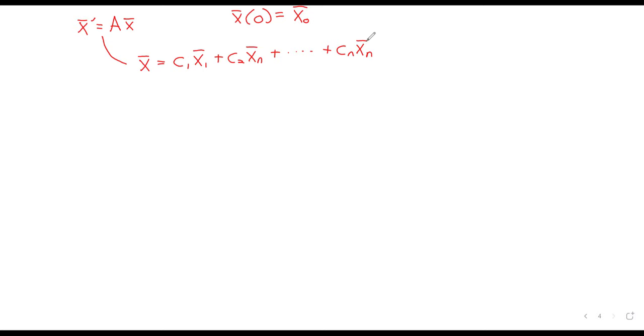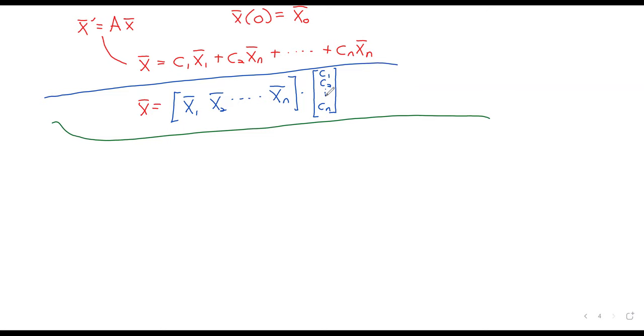Then putting aside the initial condition for just a moment, when we solve this, we find that x is a linear combination of solutions. That is to say, we find the general solution. And we can rewrite this. This might not really be second nature to us, if we haven't taken a linear algebra class, but we can rewrite this as a matrix times a vector.